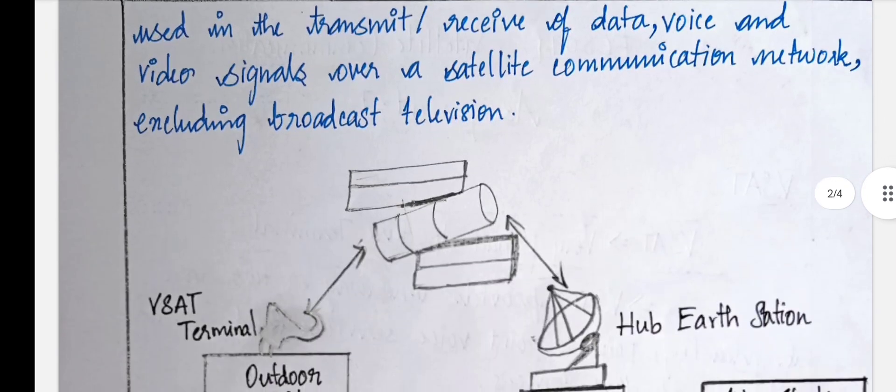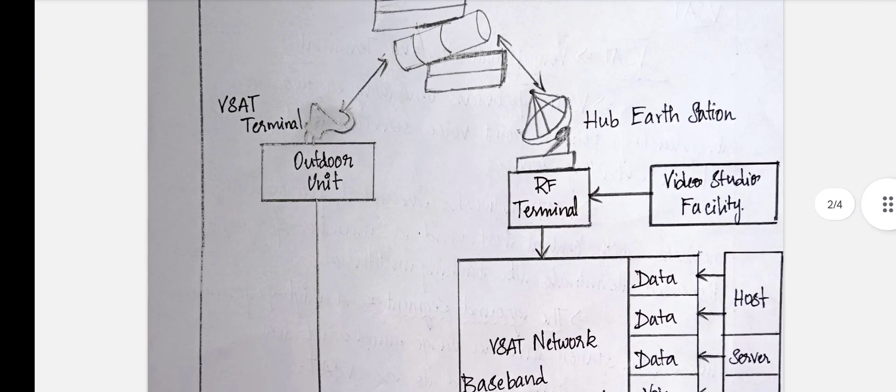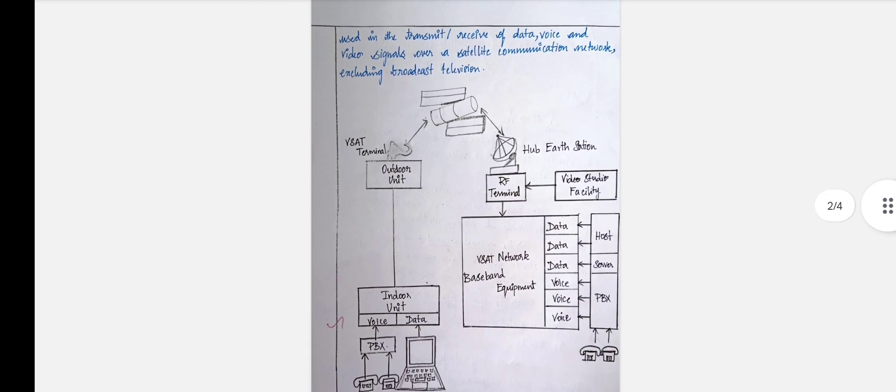In this diagram we will see that it is connected to a ground station, and the ground station has a hub earth station, and opposite to it has a VSAT terminal.